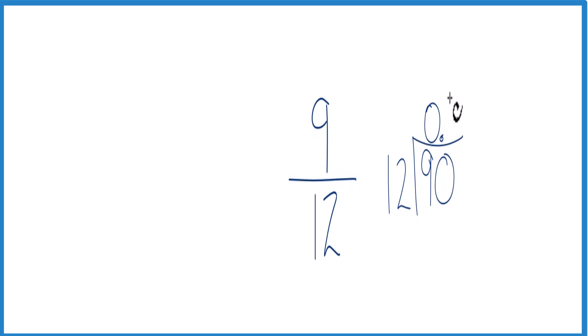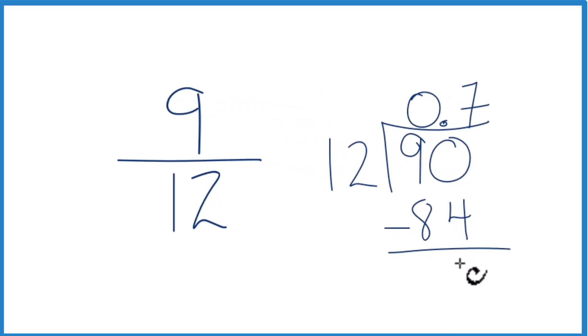So now 7 times 12, that's 84. So when we subtract, we get 6.